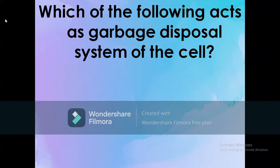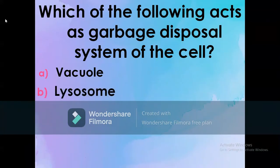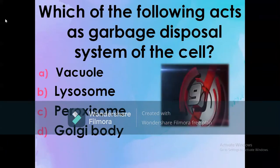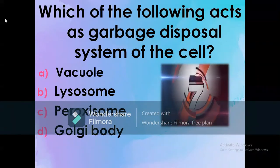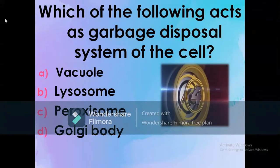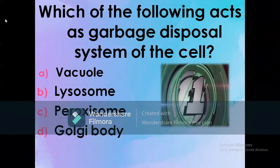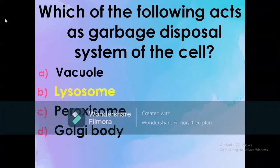Which of the following acts as the garbage disposal system of the cell? A) Vacuole, B) Lysosomes, C) Peroxisome, D) Golgi bodies. The correct option is B: Lysosomes. Lysosomes act as the garbage disposal system of the cell.